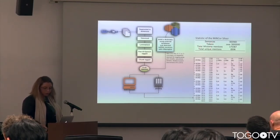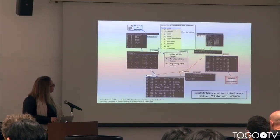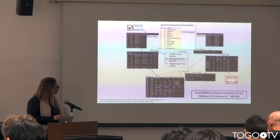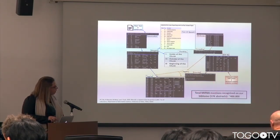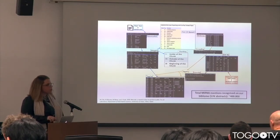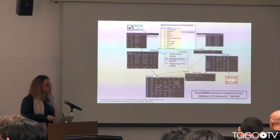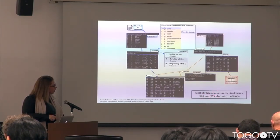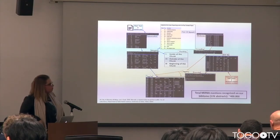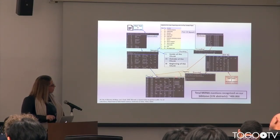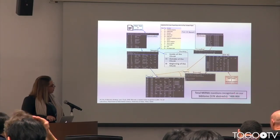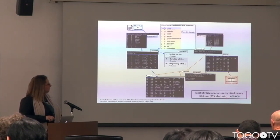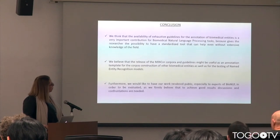These are the statistics of the corpus, and this is the flowchart of the NER suite we performed. We performed it on the bibliome obtained using different filtering methodologies through the entire PubMed, where we have 57,000 abstracts regarding microRNAs. Our model extracted over 400,000 mentions from it.